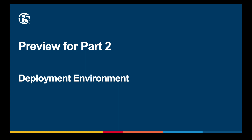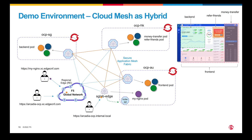In part 2, I will go through the process to build a hybrid pattern. This is a quick preview of the environment we are going to set up: a sample financial application consisting of multiple microservices distributed across multiple OpenShift clusters. Cloud Mesh will be deployed as both a pod and a node on OCP to form a secure application mesh fabric. Please look out for the video on part 2.